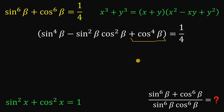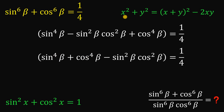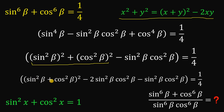Now let's focus on this result and rearrange some terms. We have the product sine squared beta times cosine squared beta, and also the sum sine to the fourth power of beta plus cosine to the fourth power of beta. Since 4 is a multiple of 2, we use the identity x squared plus y squared equals x plus y raised to the power of 2 minus 2xy. So sine to the fourth power of beta plus cosine to the fourth power of beta can be rewritten as sine squared beta plus cosine squared beta, raised to the power of 2, minus 2 times sine squared beta times cosine squared beta.